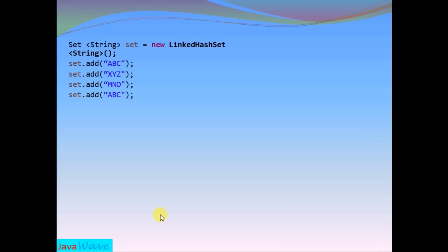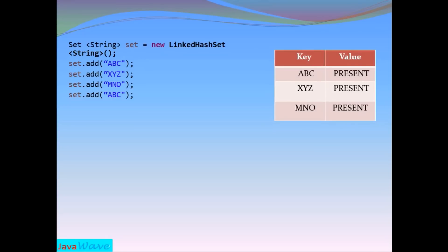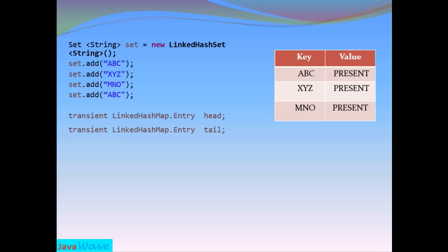Here is one LinkedHashSet where I am adding four objects, with the first and fourth being the same. LinkedHashSet internally uses LinkedHashMap, storing values in key-value pairs where the key is the actual value added and the value is the constant PRESENT. While adding these values inside the HashMap bucket, it also stores two more values: LinkedHashMap.Entry head and LinkedHashMap.Entry tail, both transient variables.